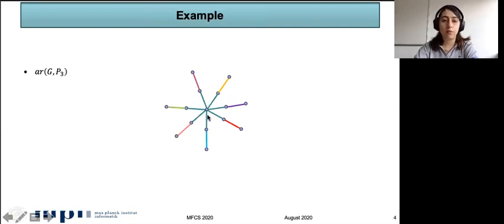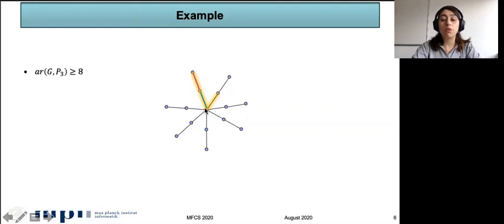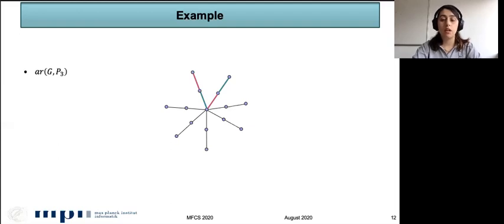Now let's see how we obtain this coloring and why it is the maximum. If the anti-Ramsey number of G and P3 is greater than or equal to eight, then we have two distinct colors in a branch. We should be careful about paths and edges incident with the center vertex. We cannot assign a new color to edges incident with the center vertex, because otherwise we would build a rainbow P3. So we should again use a color already used — red or green — for these edges, and we don't add any new color in this way.